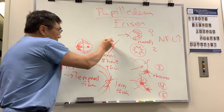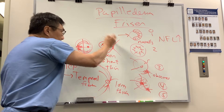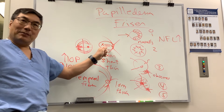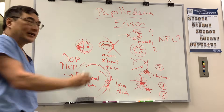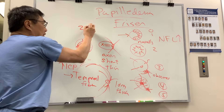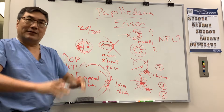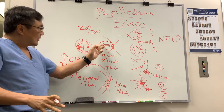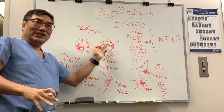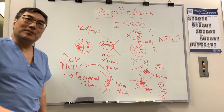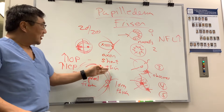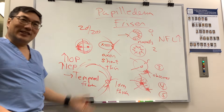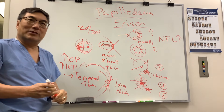Both glaucoma and increased intracranial pressure spare the papillomacular bundle until very late. So often acuity is 20/20 and central vision is normal until very late, because that fiber is really short and thin. Short and thin means least likely to feel the pressure, including increased intracranial pressure.